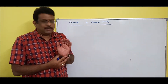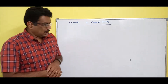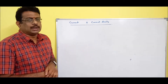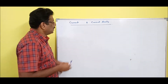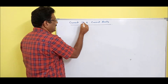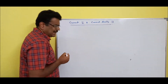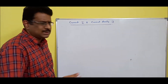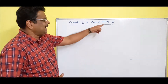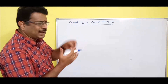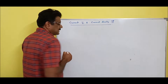Welcome to the online video lecture series on Electromagnetic Waves. In this session I am going to discuss current and current density. Current is nothing but I and current density is nothing but J. Current is the rate of flow of charge, and the rate of flow of charge with respect to cross-sectional area is current density. Since the area is important, current density is a vector, but current is a scalar.